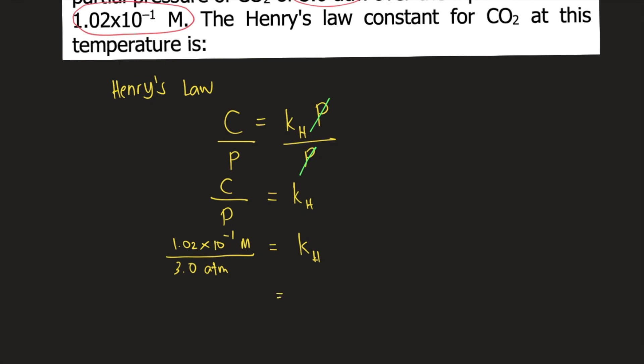So KH is equal to 1.02 times 10 raised to negative 1 divided by 3.0. So that is equal to 0.034, and the unit would be molar per atmosphere, or M per atm.